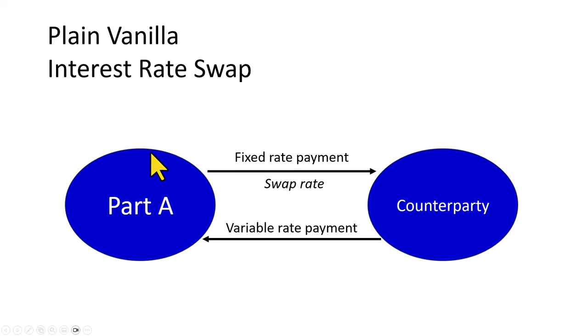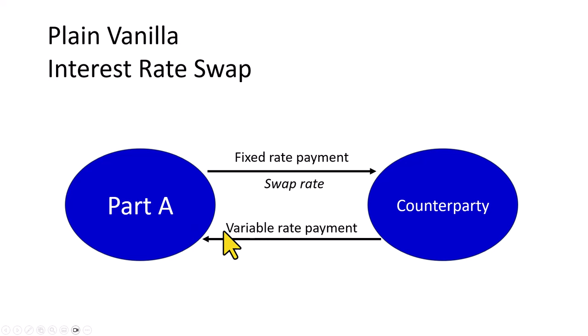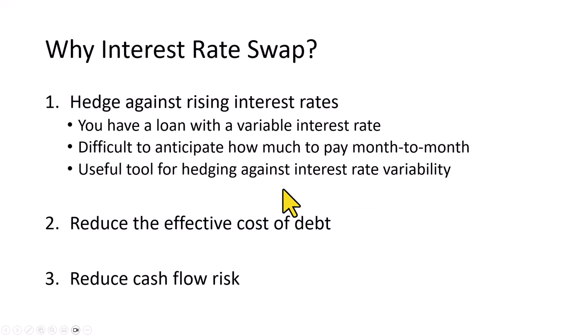As illustrated here, one party — let's call him Party A — agrees to pay fixed while receiving floating, or variable if you like. The fixed interest rate is referred to as the swap rate.